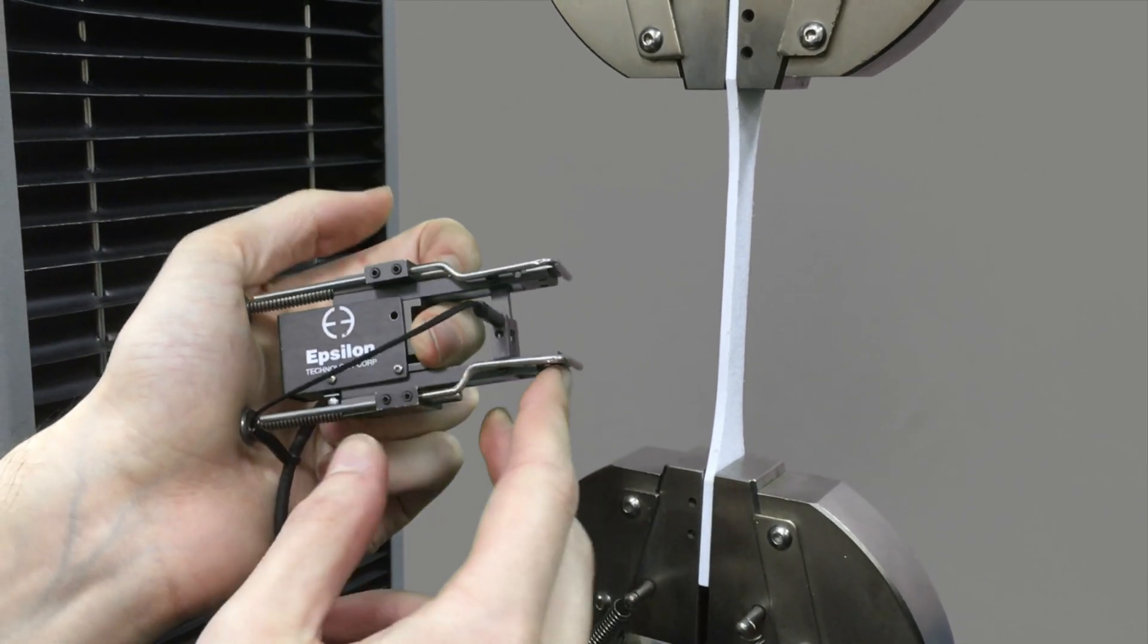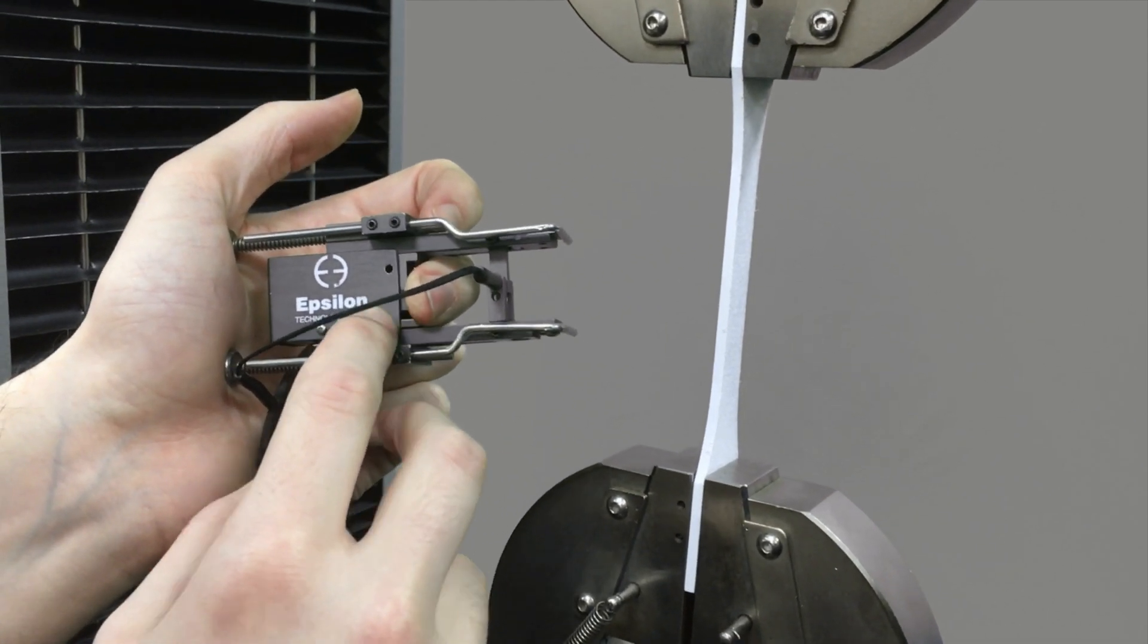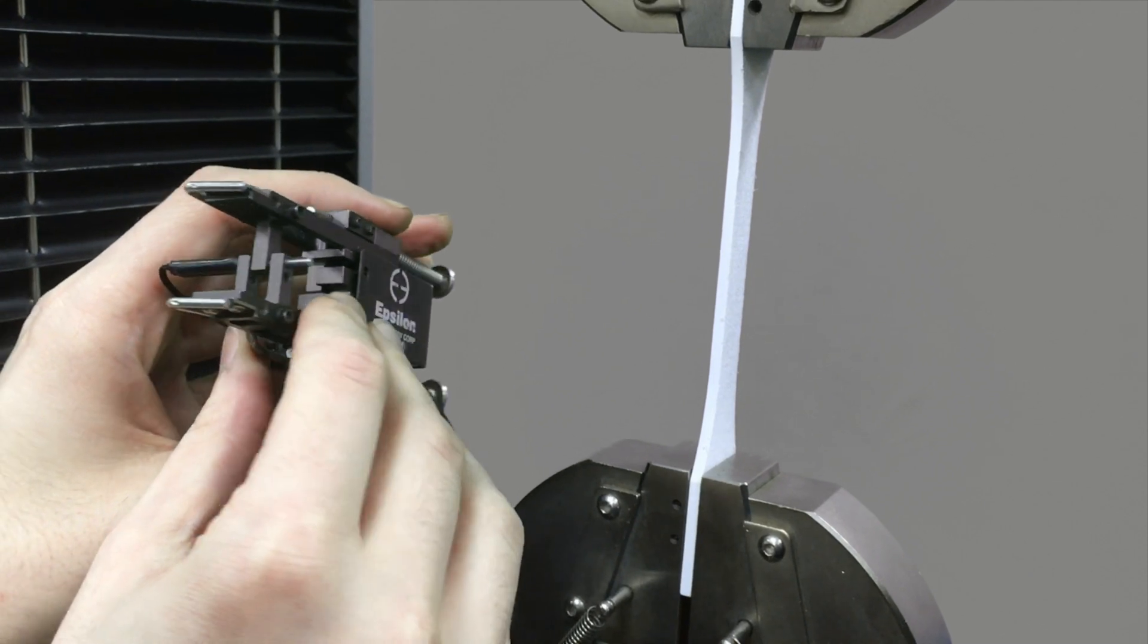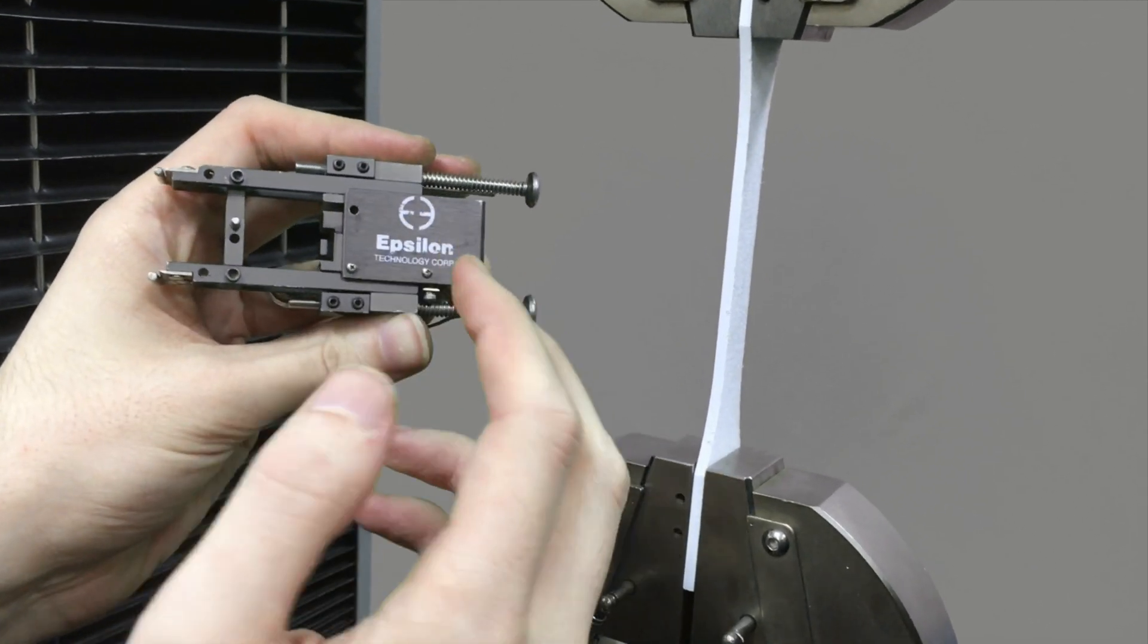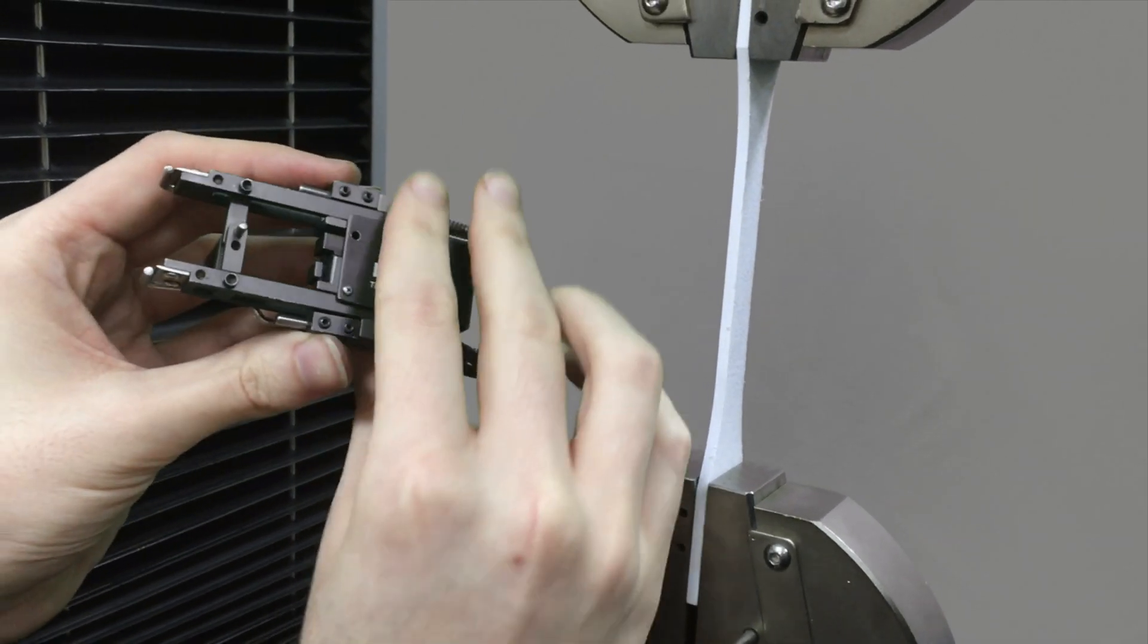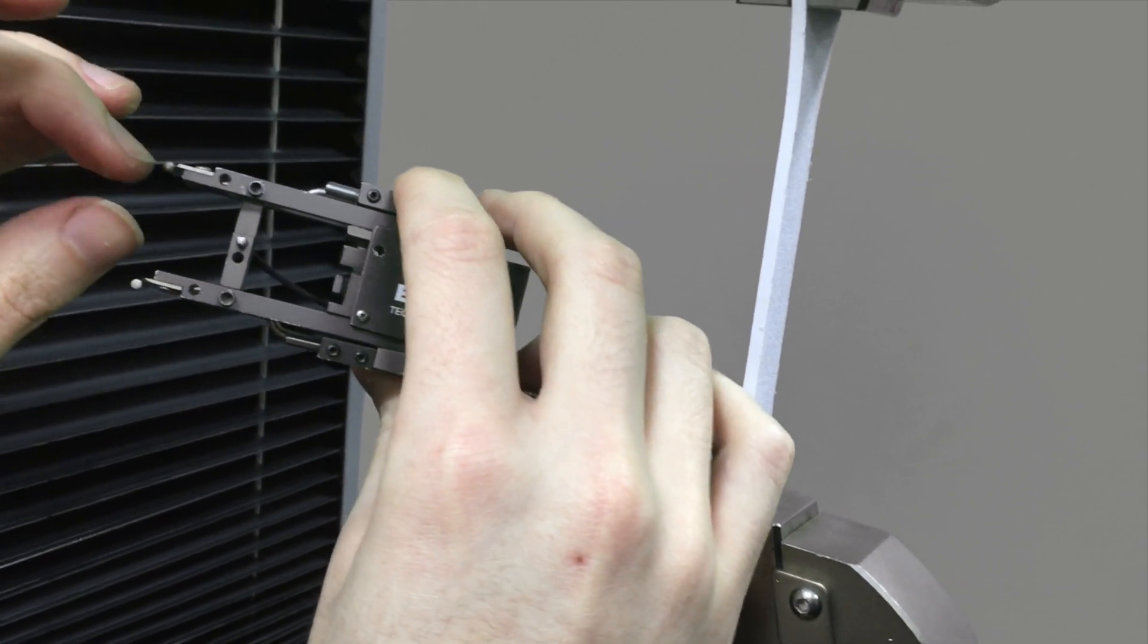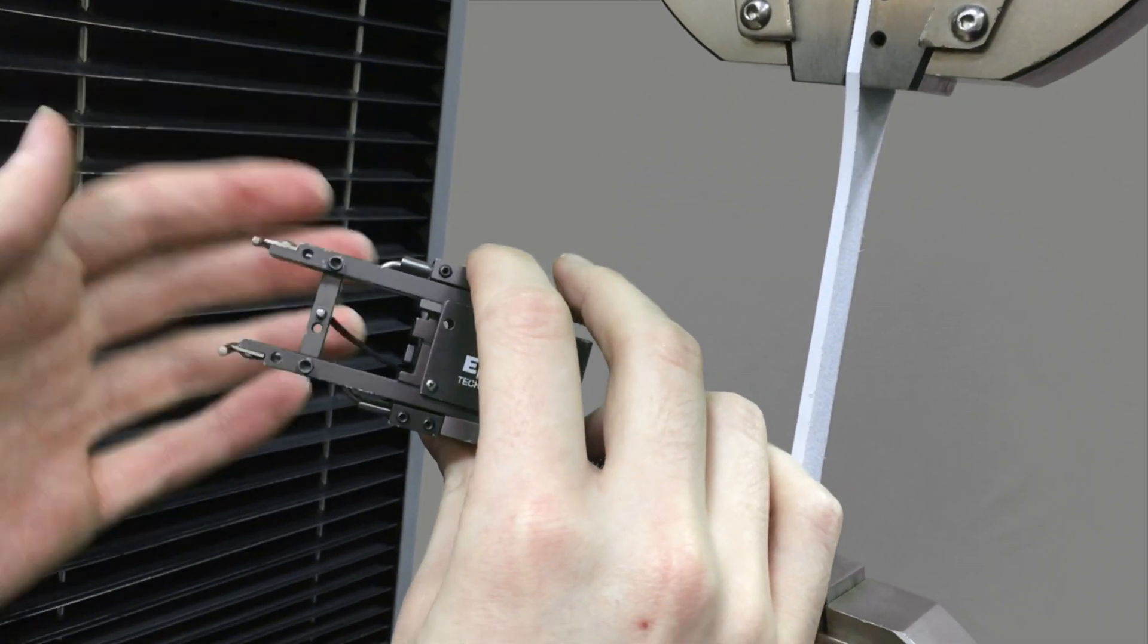Each extensometer is rated for a certain gauge length set by the device specifications. All extensometers have some way of indicating where your gauge length is. For example, you'll notice that this one here has a little pinhole that when you put a pin in there, the teeth are exactly at the gauge length, which in this case I believe is one inch apart.